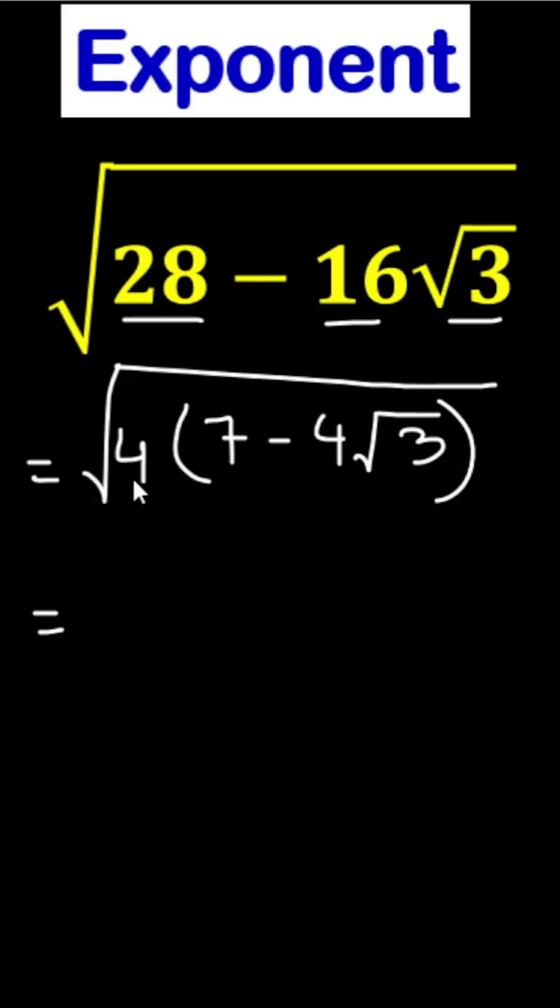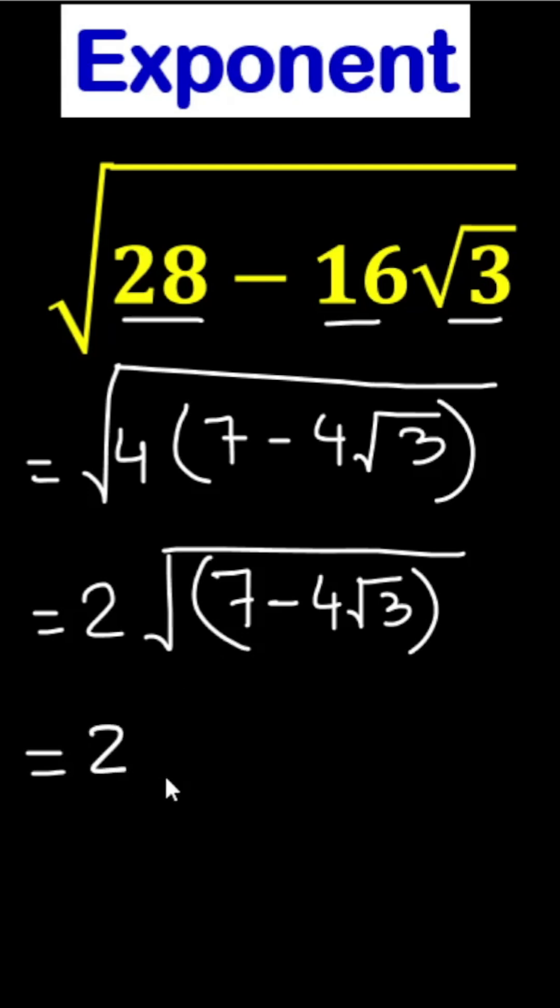This 4 we can take out of the square root, so we will get 2. And this one is 7 minus 4 root 3. Now what can we do? This 7 we can write as 4 minus 4 root 3 plus 3.